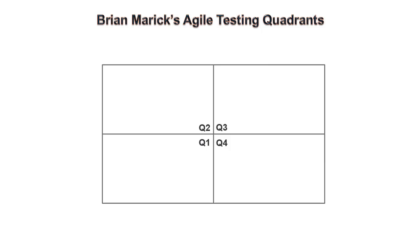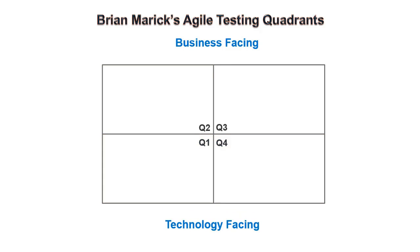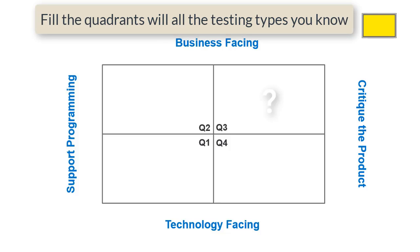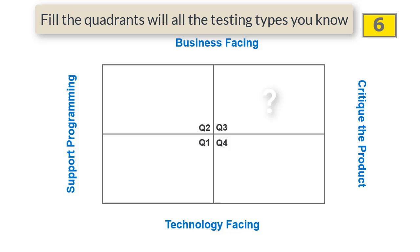Now let us classify Agile testing using Brian Marek's Agile Testing Quadrant. The upper two quadrants, Q2 and Q3, are business facing. The lower two are technology facing. The left two quadrants are used as part of quality assurance to support programming, and the right quadrants are to critique the product for quality control. I hope you have seen my video on basic terminologies in IT. If not, please watch it to understand the meaning of quality assurance and quality control.